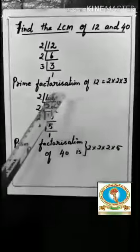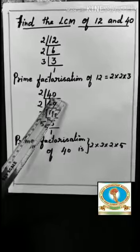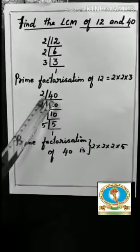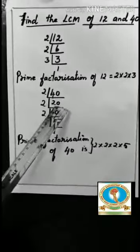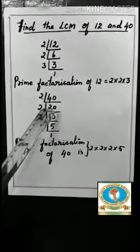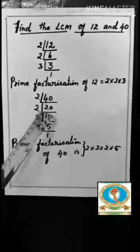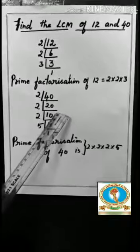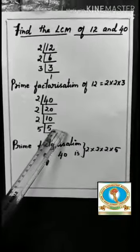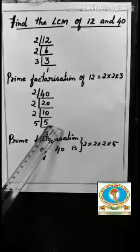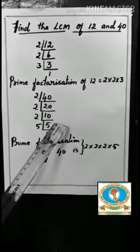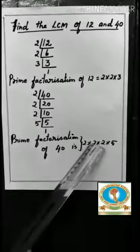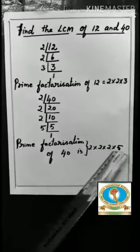Next we do the prime factorization of 40. Here 40 is an even number. We can divide it by 2. 2, 20's are 40. Again it is divided by 2. 2, 10's are 20. Again 2, 5's are 10. Here 5 is a prime number. It is divided by itself. So 5, 1's are 5. Here the prime factorization of 40 is 2 into 2 into 2 into 5.